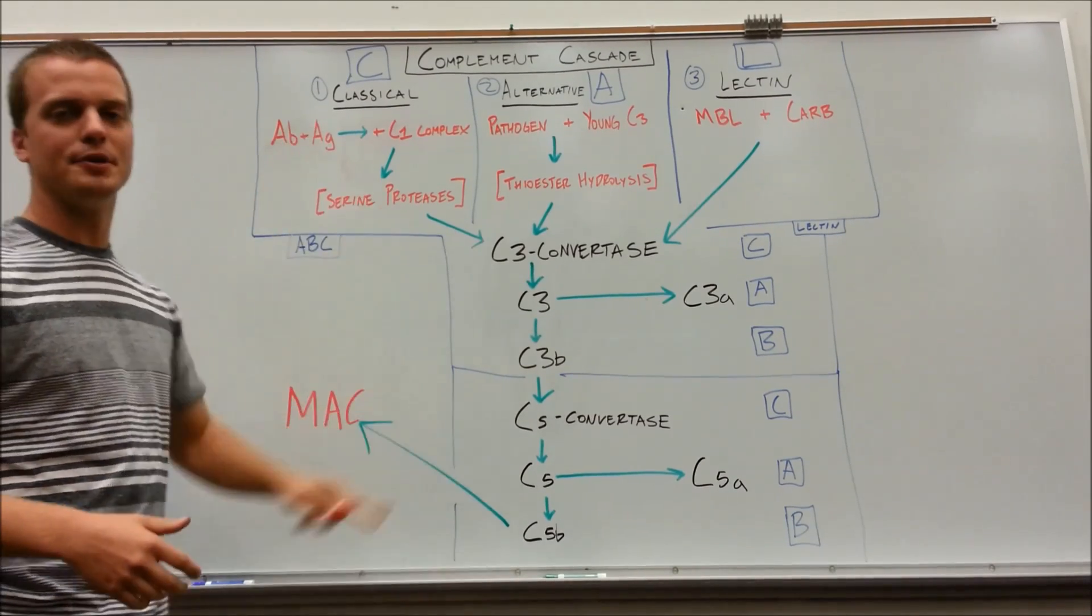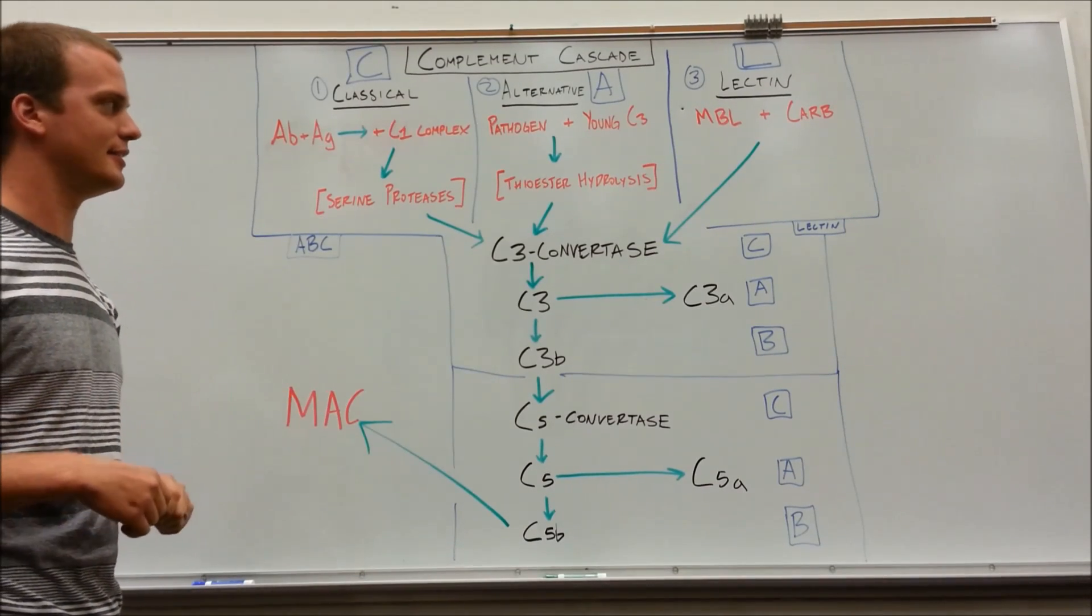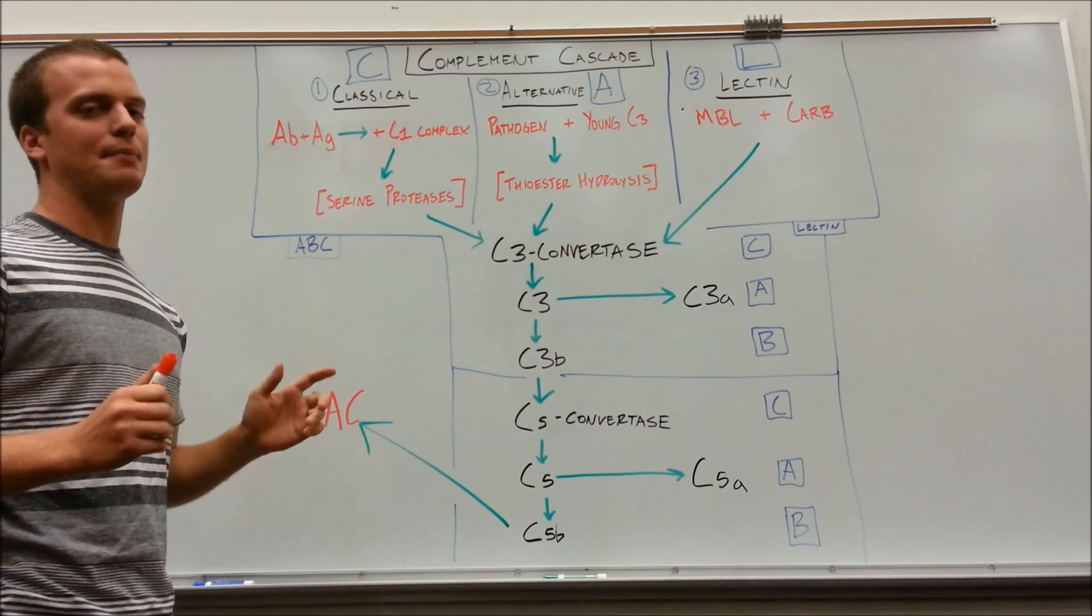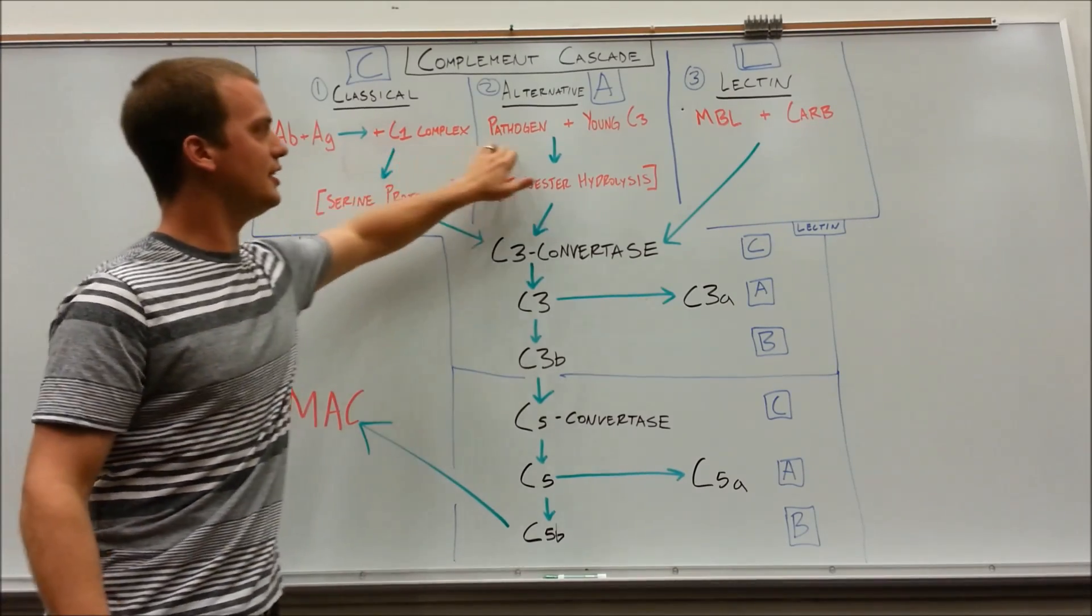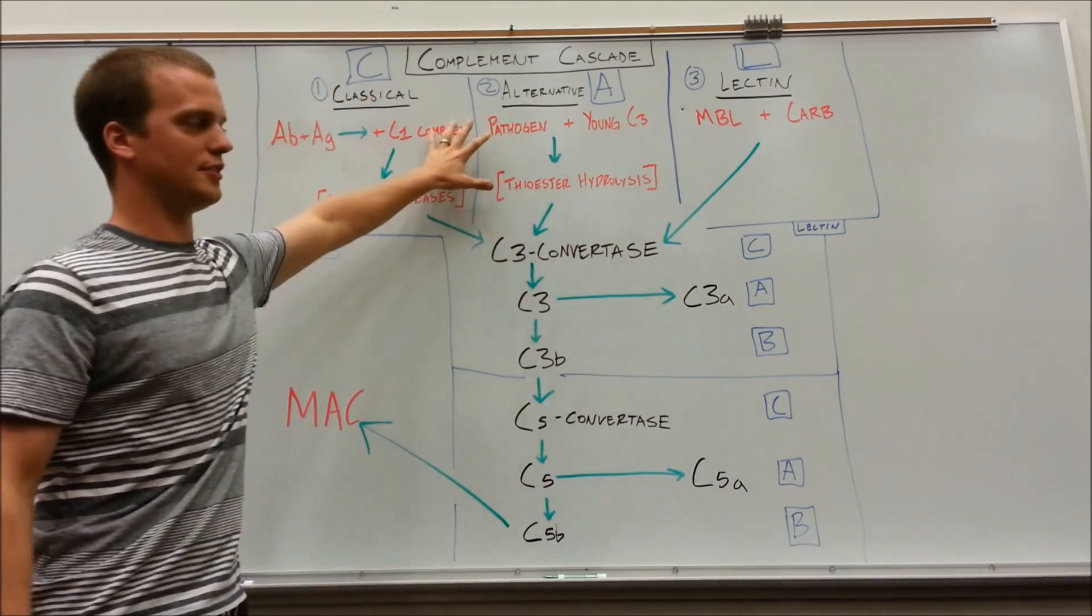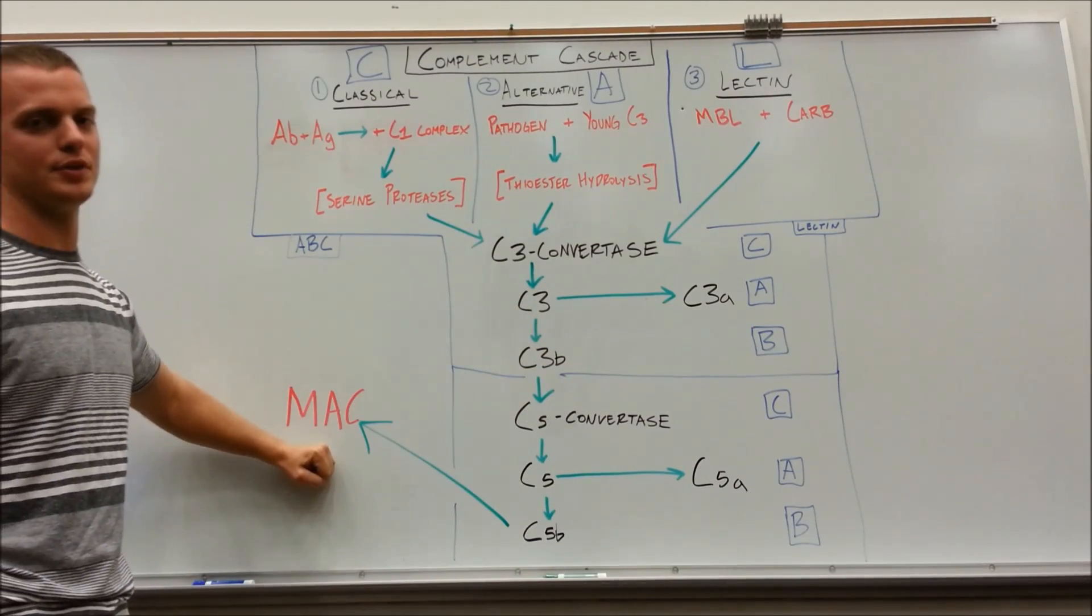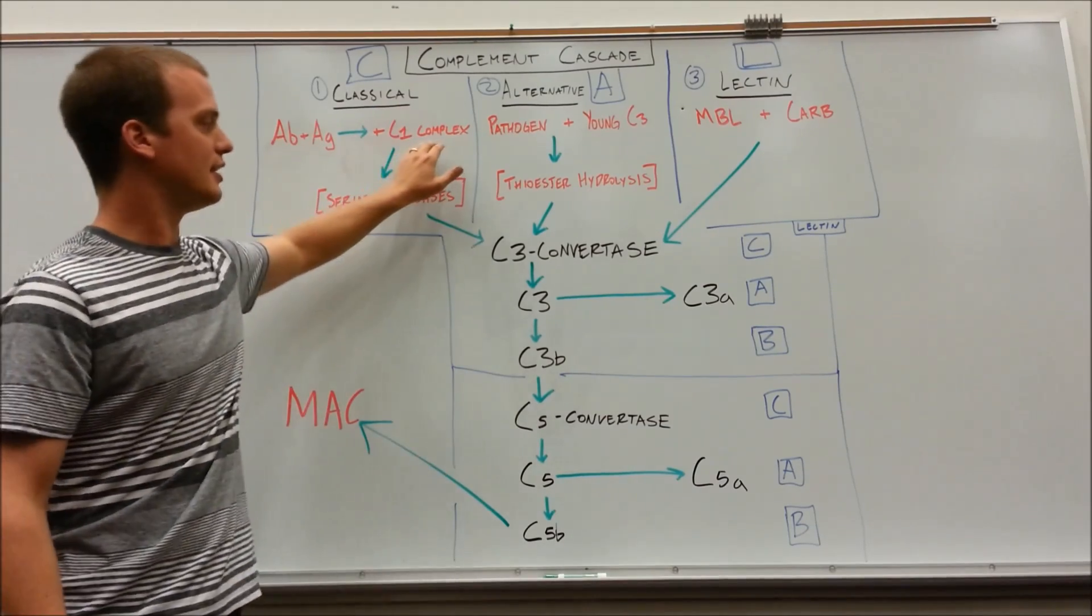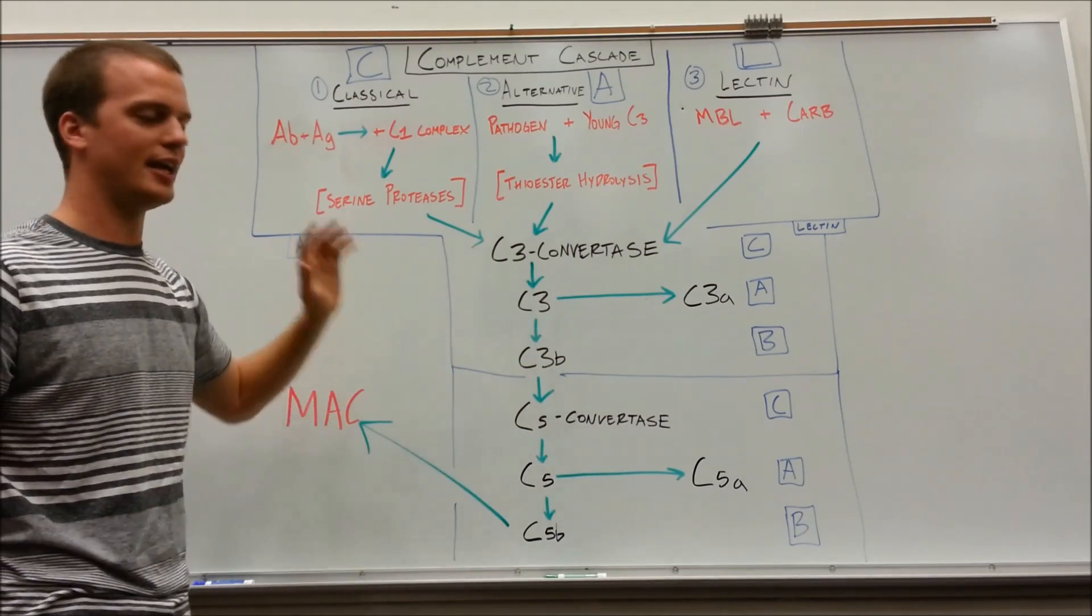First of all, I know there's a lot up here on the board. Stick with me though, it'll be really simple, really fast, really easy. I know it's a little overwhelming, but we'll get to it. The biggest thing about the complement cascade is that you have to visualize that there are three separate starters that take you to the same end pathway that end with the same result. That's why I have this huge picture, all this stuff up here. You've got to visualize each one of these pathways can get you to the end. They all start a little bit different, but they all end the same way.